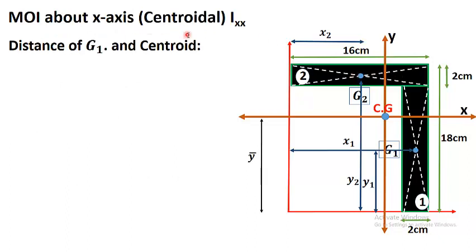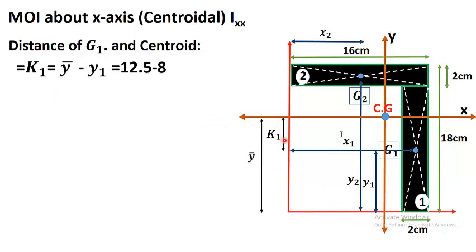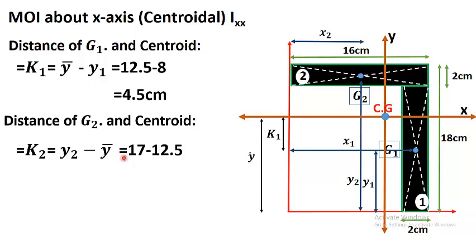To find the centroidal Ixx, we calculate k1 and k2. k1 is the distance between the centroid of figure 1 and the combined centroid of the whole figure: k1 = ȳ − y1 = 12.5 − 8 = 4.5 centimeters. k2 is the distance between the combined centroid and the centroid of figure 2: k2 = y2 − ȳ = 11 − 12.5, which also comes out to be 4.5 centimeters (in magnitude).